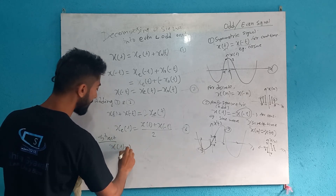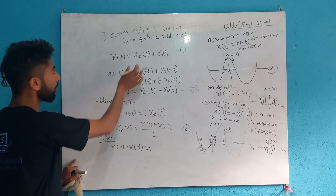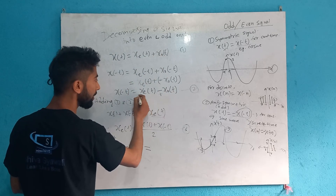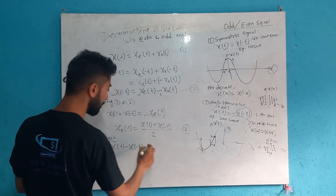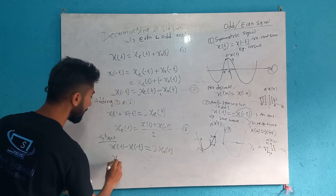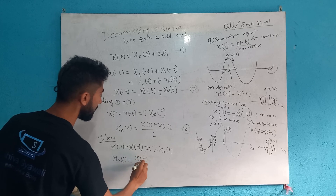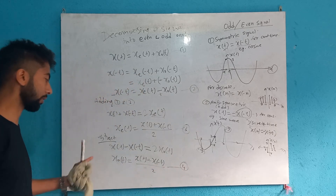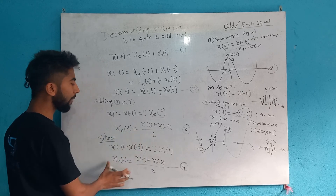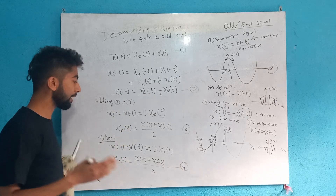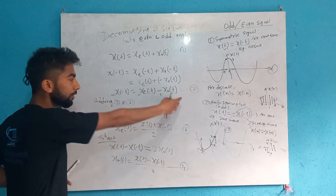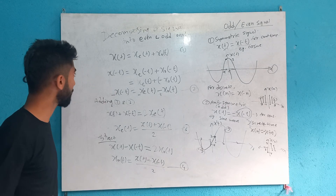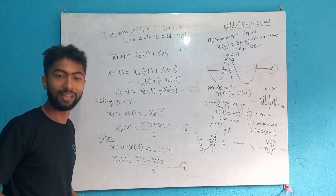Subtracting Equation 2 from Equation 1: x(t) - x(-t) = 2·x_o(t), so the odd part is: x_o(t) = [x(t) - x(-t)] / 2. This is our expression for the odd part. So now we have the even and odd parts, and we can use these formulas to decompose any signal. Thank you for watching — subscribe for new videos.